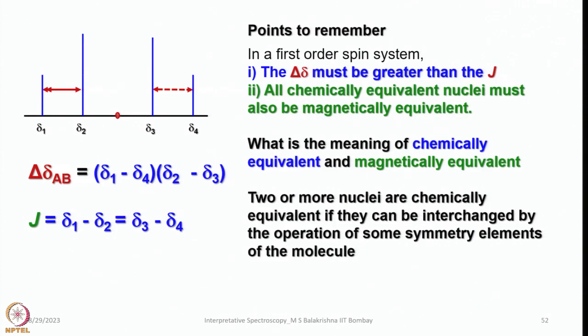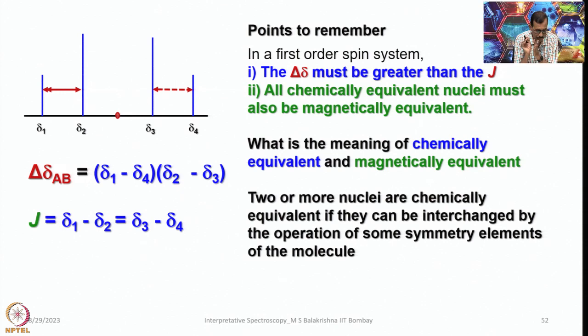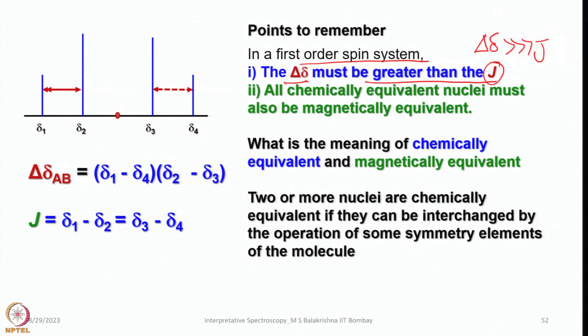A few points to remember in case of second order coupling: in a first order spin system, delta-delta must be greater than 5J. All chemically equivalent nuclei must also be magnetically equivalent — this is very important. In a first order spectrum, all chemically equivalent nuclei are also magnetically equivalent.